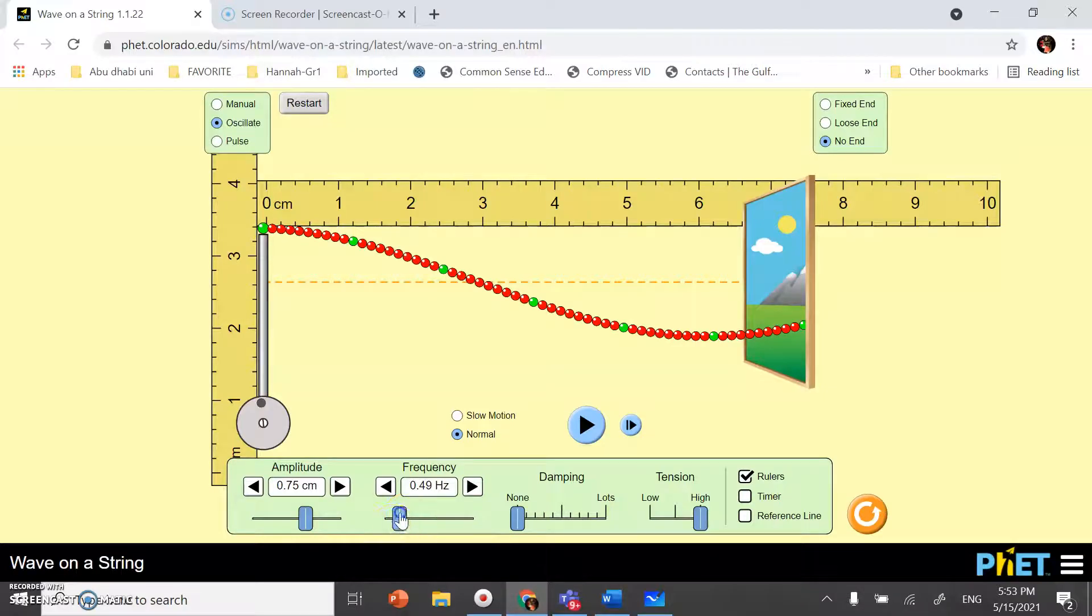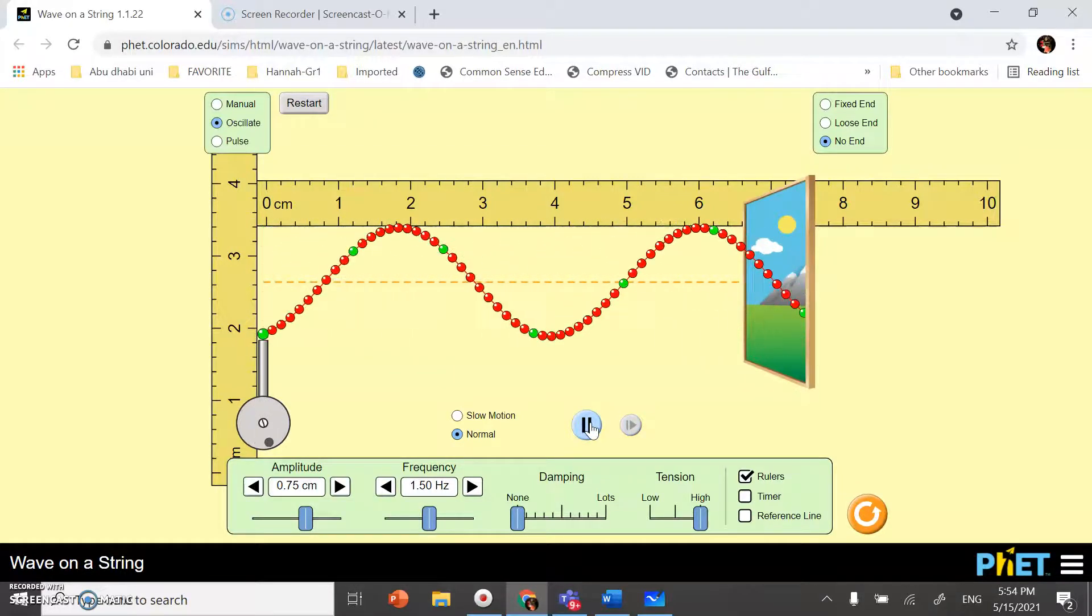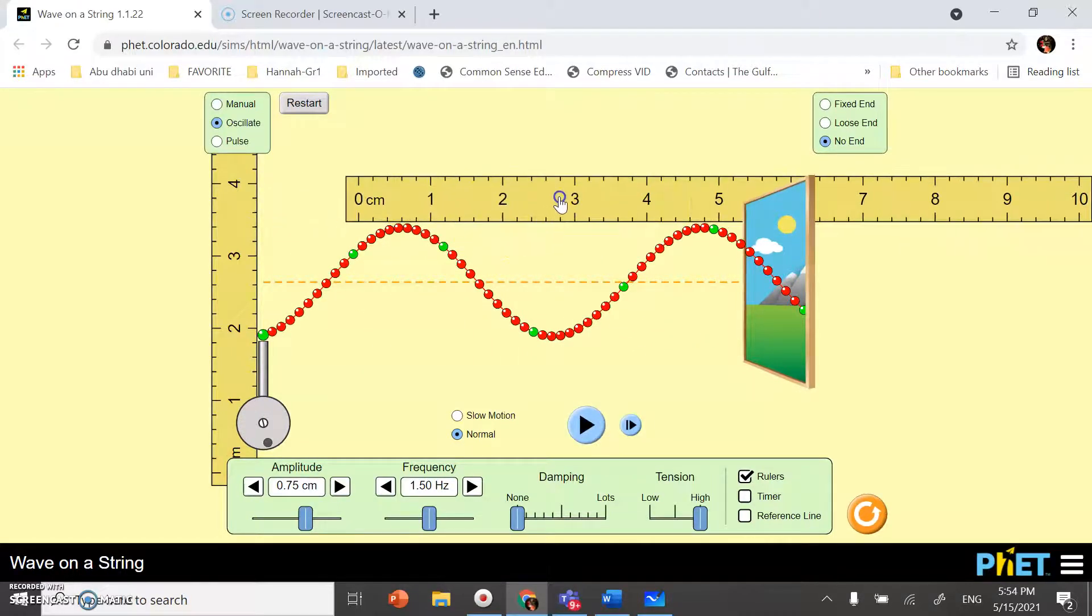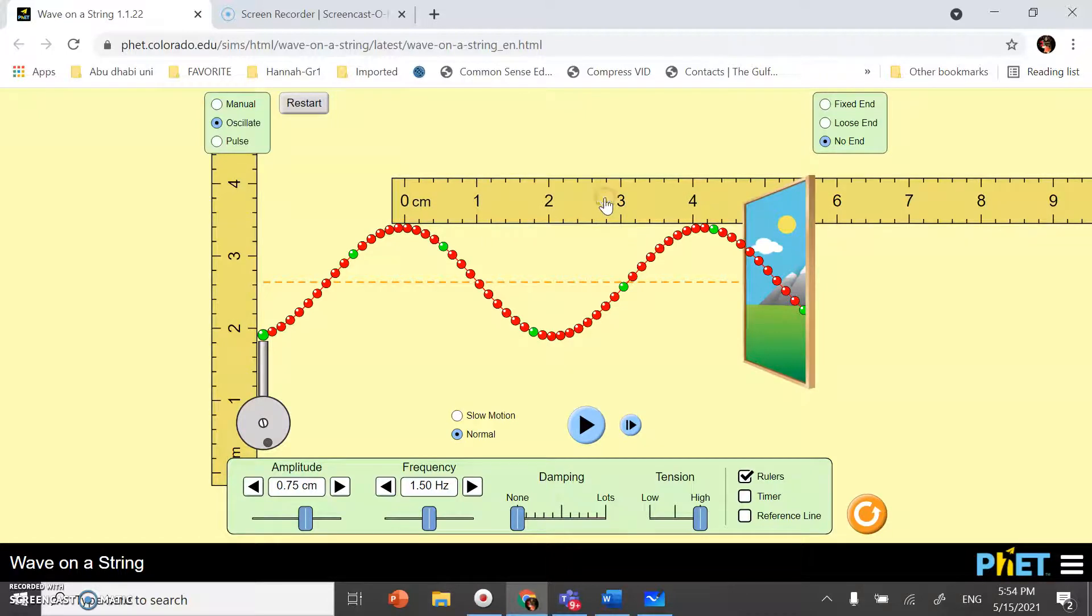So, I'll set it to 1.5. Oscillate. You see how the frequency increased. And, okay. Distance between two crests. This is wavelength. So, the distance from here till here is around 4.2 centimeter.